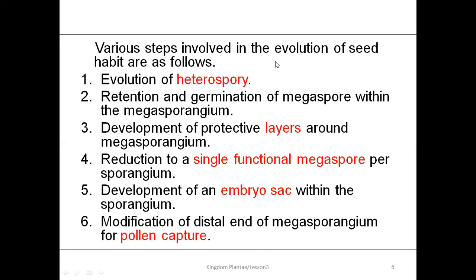The various steps involved towards the seed habit are: first, the development of heterospory; then the retention and germination of the megaspore within the megasporangium; development of protective layers around the megasporangium; reduction to a single functional megasporangium; development of the embryo sac or megagametophyte in the sporangium; and modification of the distal end of the megasporangium for pollen capture.